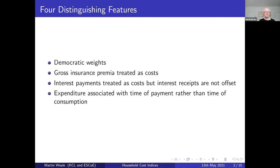First, they're constructed using democratic weights rather than plutocratic weights — the aggregate weights are calculated by taking the average of each household's expenditure share. There are very good arguments that this makes them much more suitable for indicating changes in welfare. Second, gross insurance premia are treated as costs rather than net insurance premia. Third, interest payments are treated as costs, but interest receipts are not offset. Finally, expenditure is associated with the time of payment rather than the time of consumption.